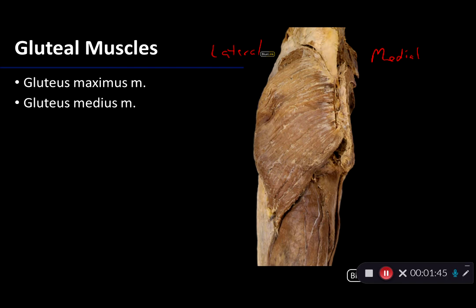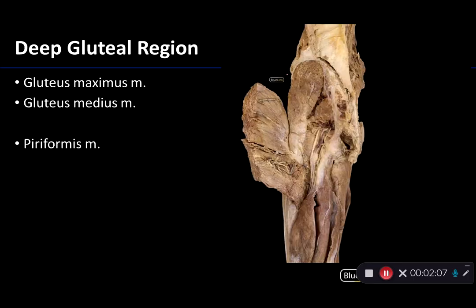While we have this rather superficial view of the gluteal region, we can just barely make out a sliver of the gluteus medius muscle. Gluteus medius is a deeper muscle to gluteus maximus. We can see it better on the next slide where gluteus maximus is being reflected away. Medius takes its proximal attachments from the lateral aspects of the ilium, just below the iliac crest, and its distal attachment on the greater trochanter of the femur.